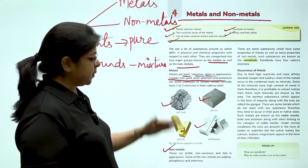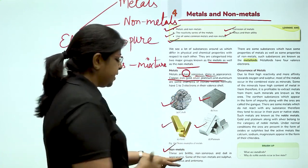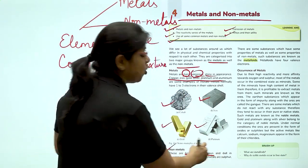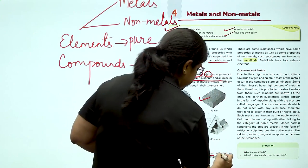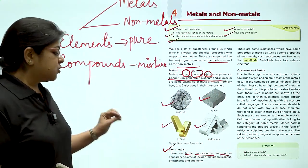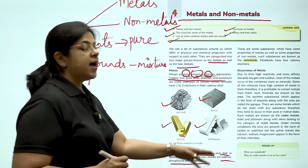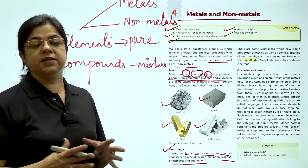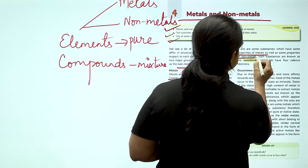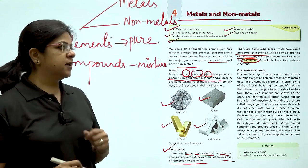Talking about non-metals, non-metals will be exactly the opposite of metals. If they are hard, they are going to be brittle. If they are sonorous, they are going to be non-sonorous. If they are shiny, these are going to be dull in appearance. Some of the examples of non-metals are sulfur, phosphorus and antimony. There are some substances which are a combination of properties of metals as well as non-metals. They are called metalloids.